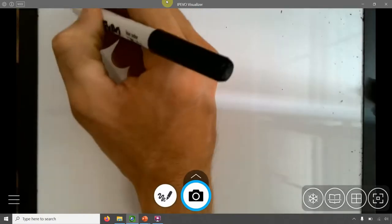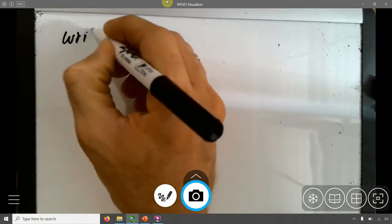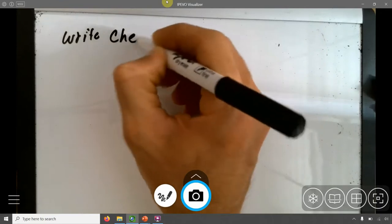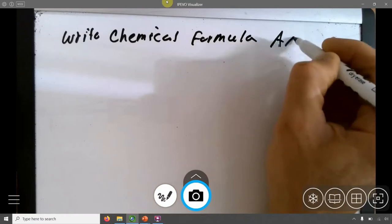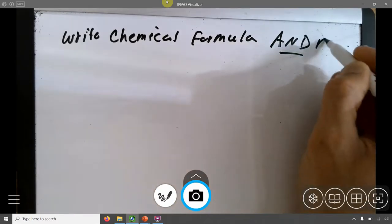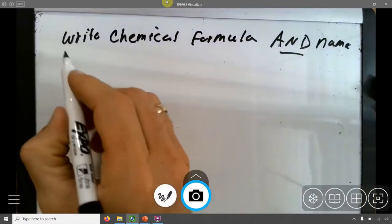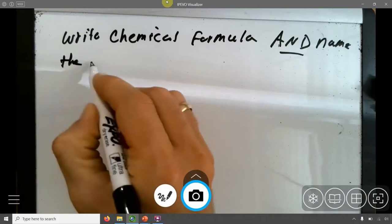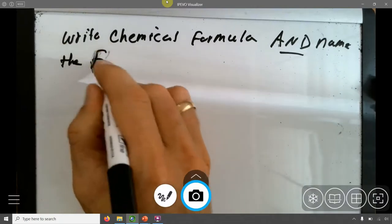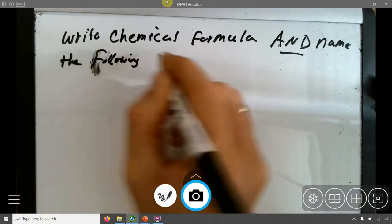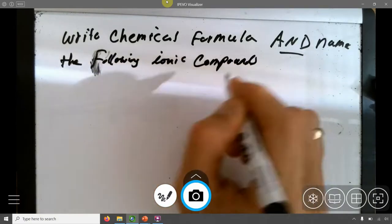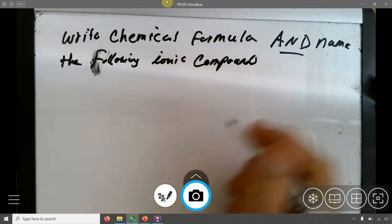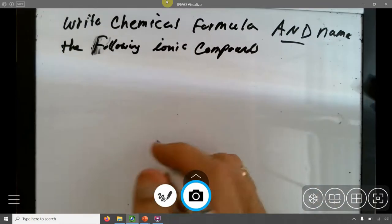So let's write the chemical formulas and name the following ionic compounds. I'm going to give you just the ions. Let's name the ions and then we'll smoosh them together and get what we need.